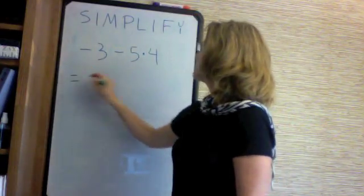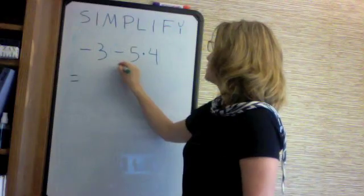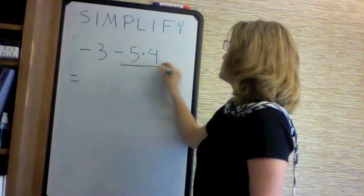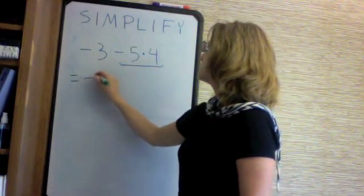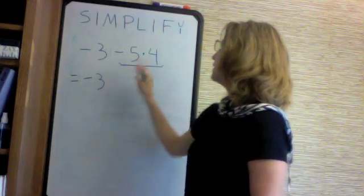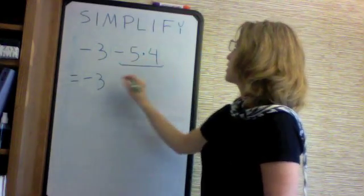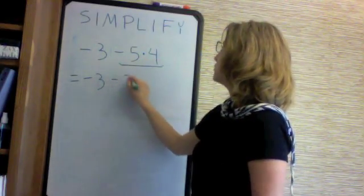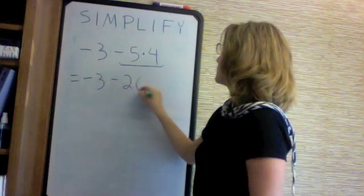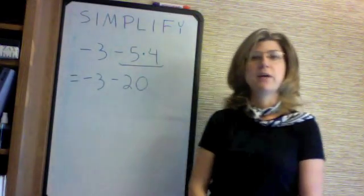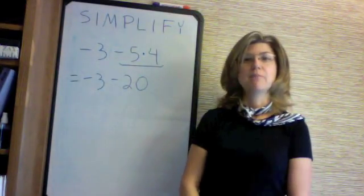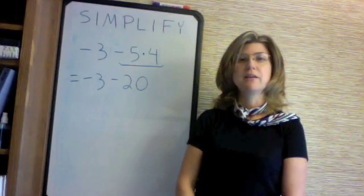Thus I will evaluate this portion first. This gives us minus 3. Minus 5 times 4 is minus 20.